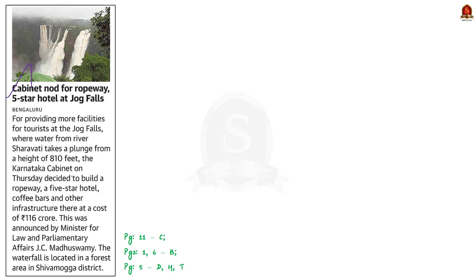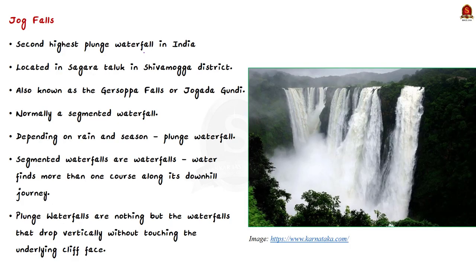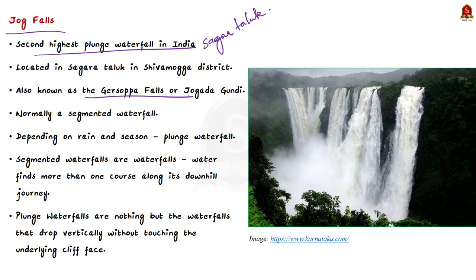The next article is about the cabinet nod for a ropeway and five-star hotel at Jog Falls. Jog Falls is the second highest plunge waterfall in India, located in Sagar Taluk in Shivamogga district, also known as the Jersoppa Falls. The first highest plunge waterfall in India is the Nohkalikai Falls in Meghalaya.